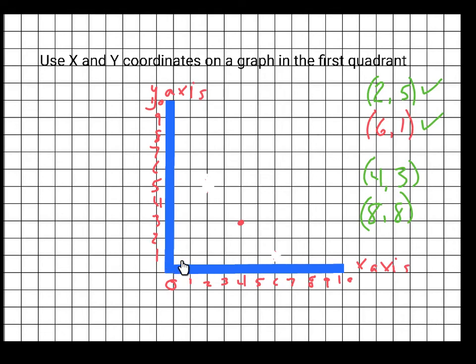You have to remember that you always go across and then up - across and then up. You never do it the other way around. So (8,8), it's right there.